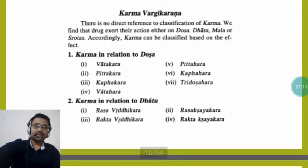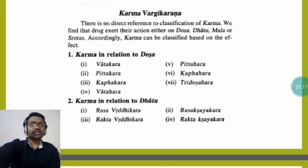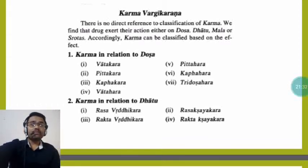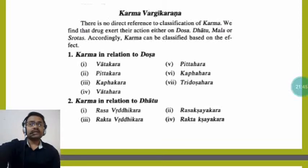Now let us see the classification of Karma in Ayurveda. There is no direct reference to classification of Karma, but we find that drug action is either on Dosha, Dhatu, Mal, or Srotas, and accordingly Karma can be classified. The first classification in relation to Dosha: Vatakara, Pittakara, Kaphakara — which increase Vata, Pitta, or Kapha — and Vatahara, Pittahara, Kaphahara — which decrease them — and Tridoshahara, which stabilizes all three Doshas.